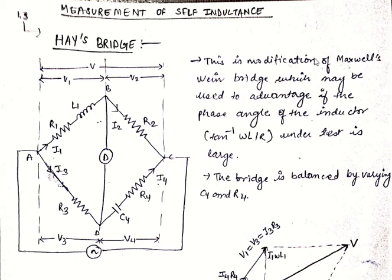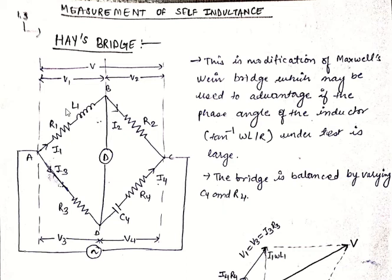Hay's bridge is a modification of Maxwell Wayne's bridge, which may be used for inductors where the phase angle is very large. The bridge is balanced by varying C4 and R4. We can also make C4 constant and by varying R4 and R3 we can find the unknown self inductance L1 and R1.